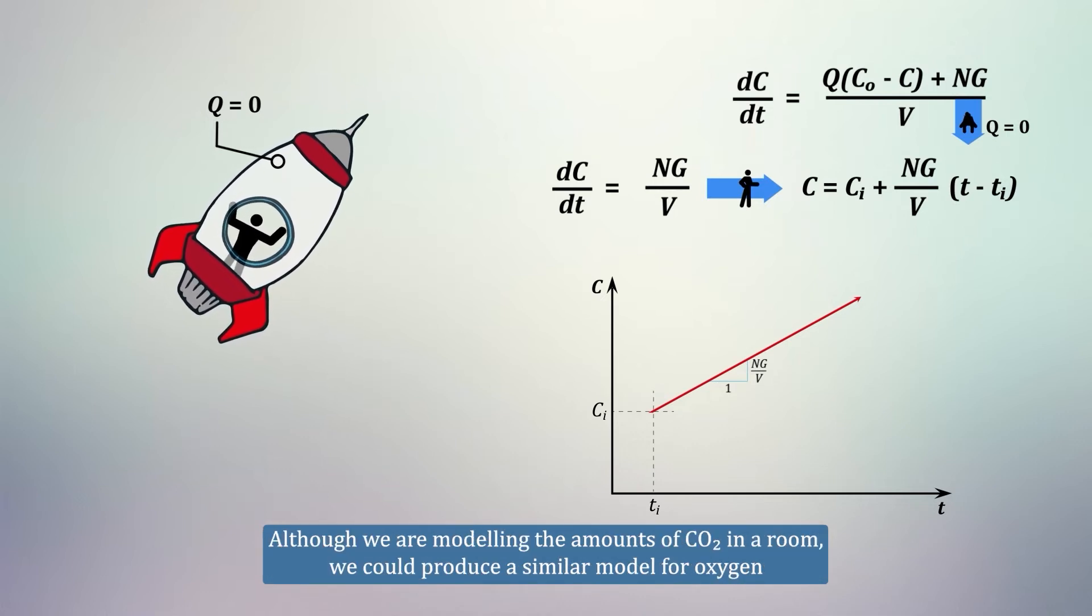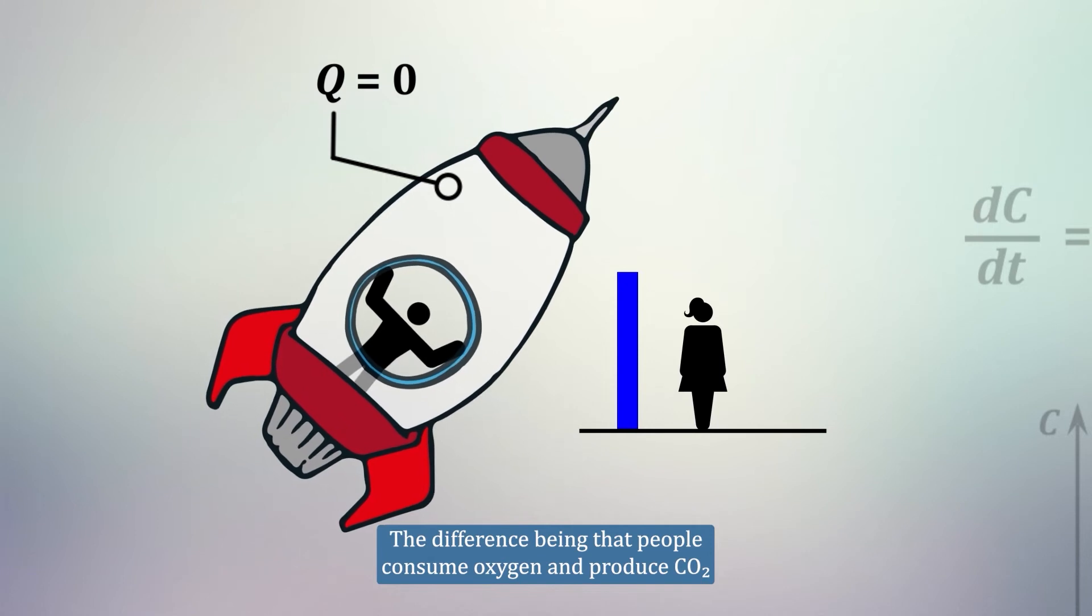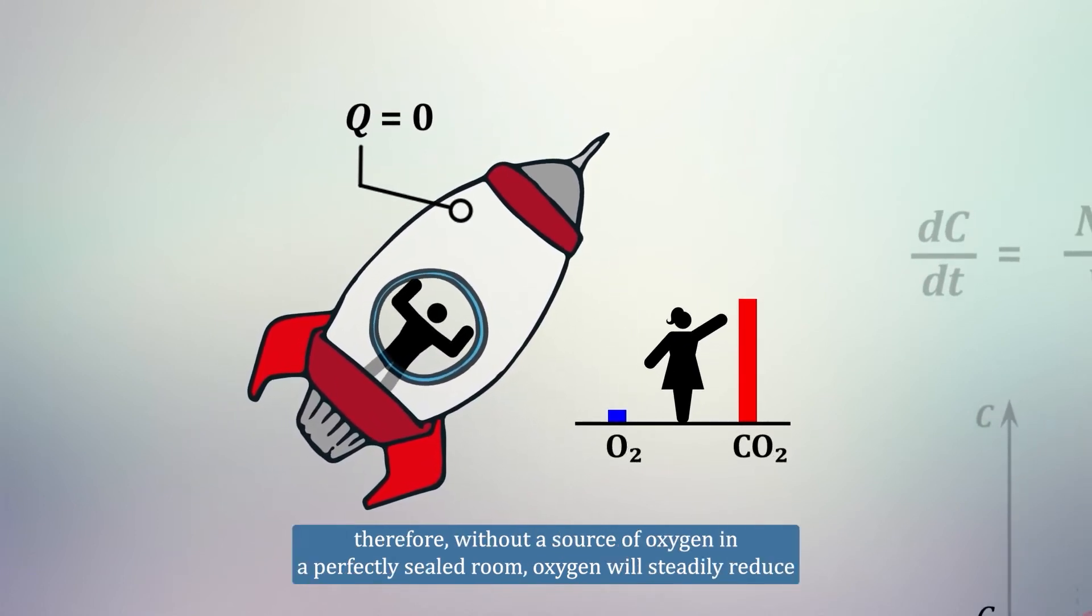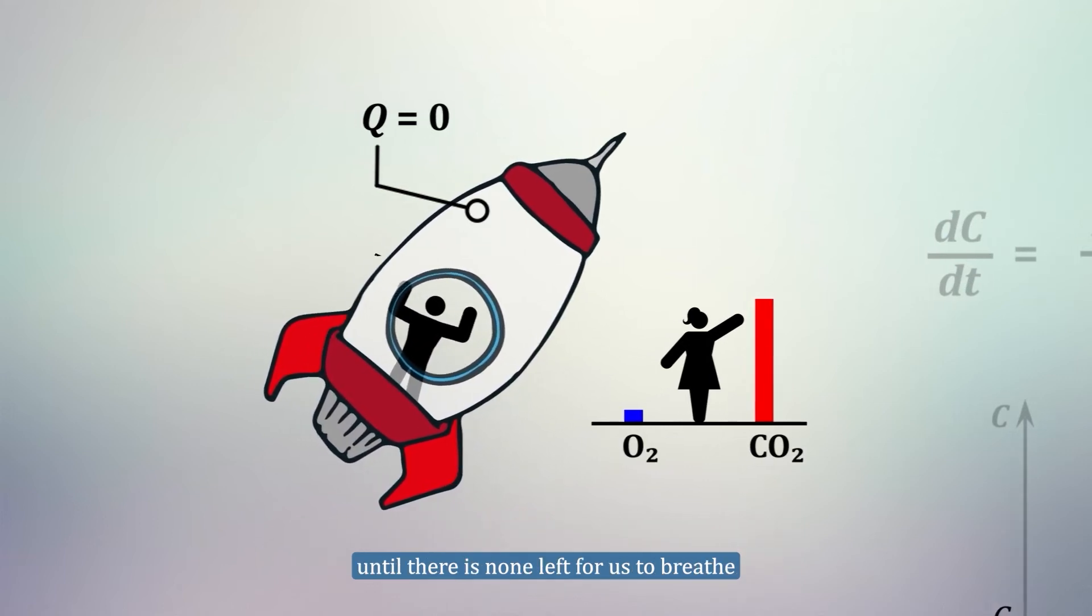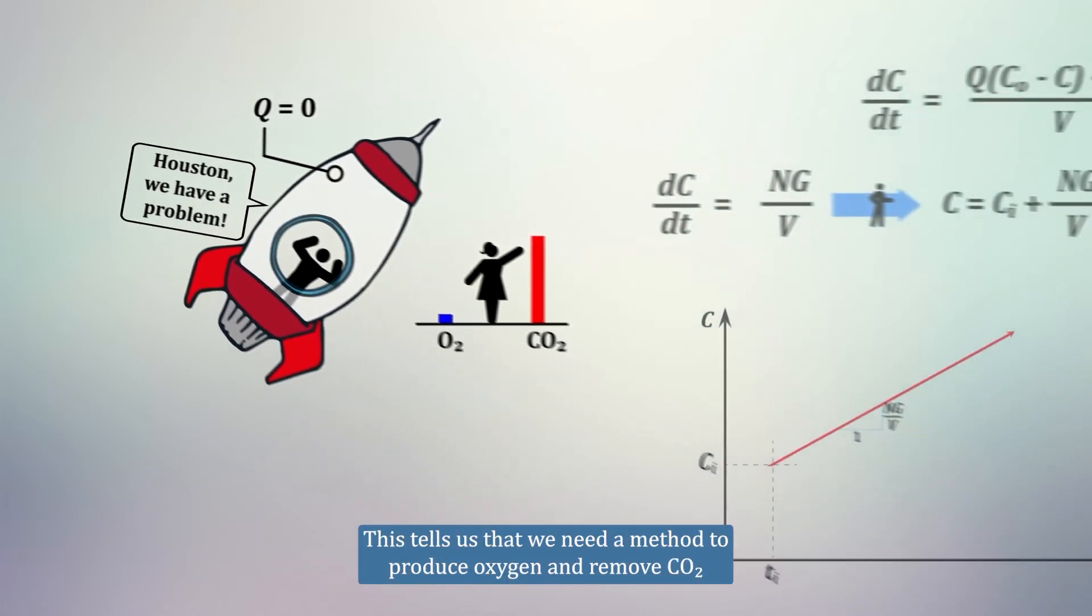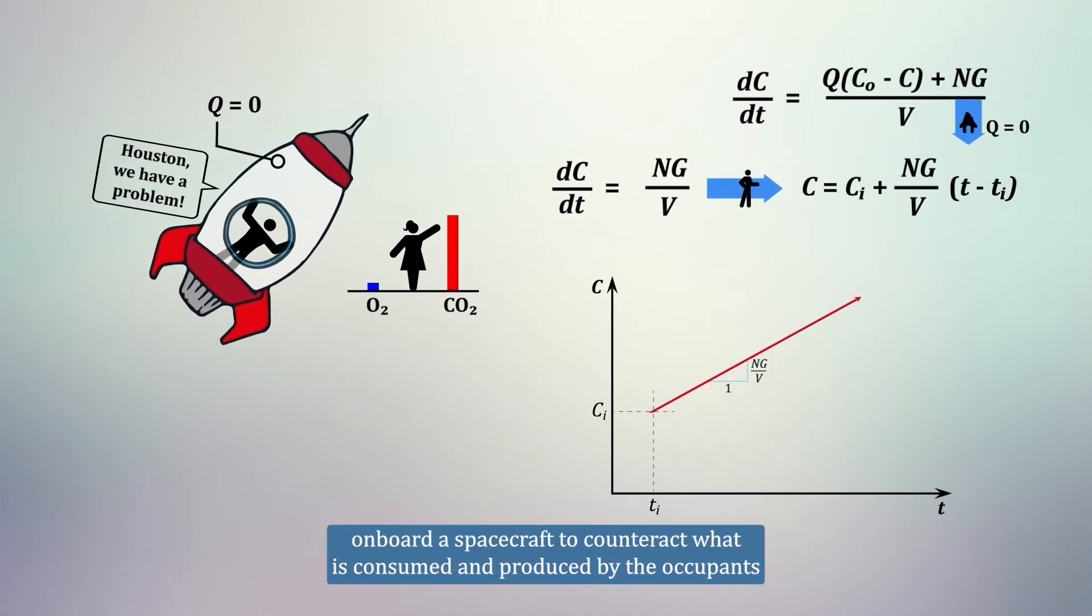Although we are modeling the amount of CO2 in a room, we could produce a similar model for oxygen. The difference being that people consume oxygen and produce CO2. Therefore, without a source of oxygen in a perfectly sealed room, oxygen will steadily reduce until there is none left for us to breathe. This tells us that we need a method to produce oxygen and remove CO2 onboard a spacecraft, to counteract what is consumed and produced by the occupants.